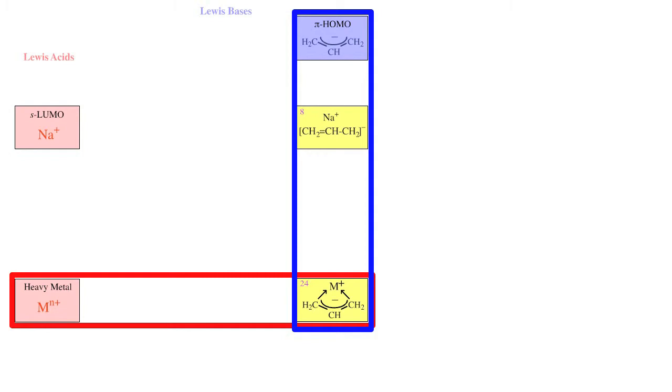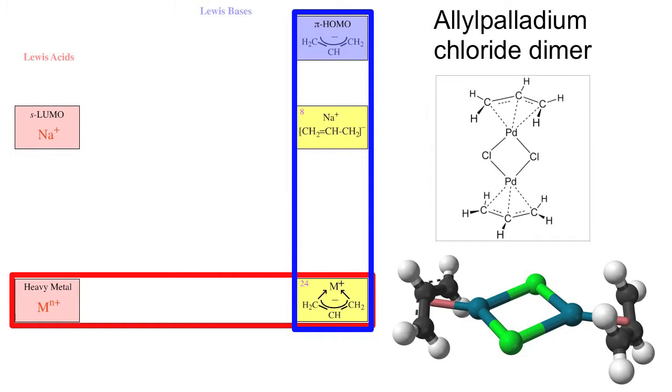An extremely interesting group of organometallics which has been a great deal of research over the past few years has been the pi transition metal complex typified by the allyl-palladium chloride dimer. This type of complex involves d orbitals on the transition metal cation interacting with the pi HOMO Lewis base.